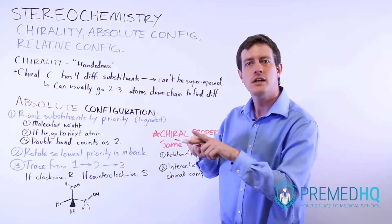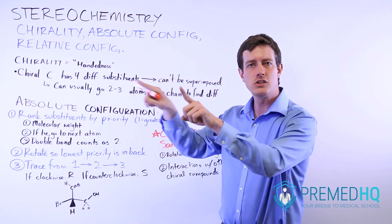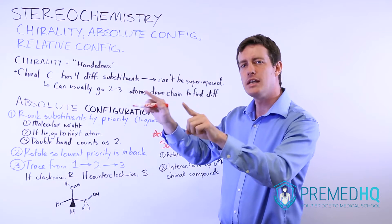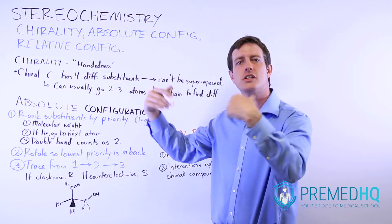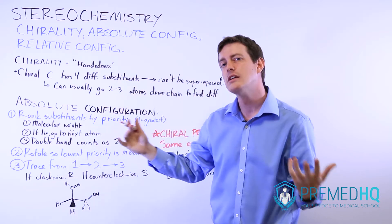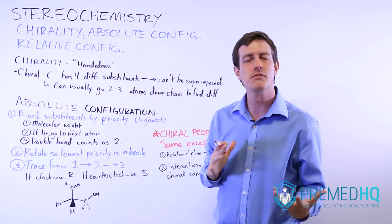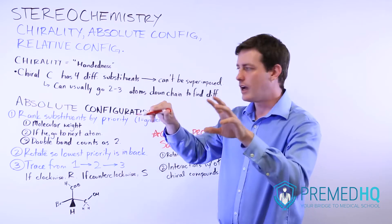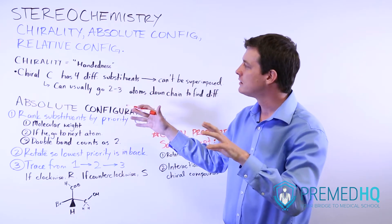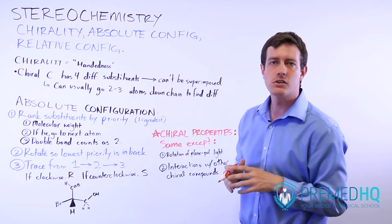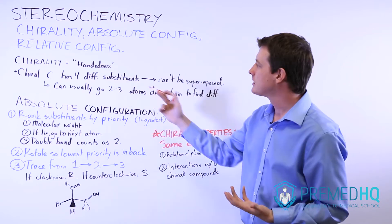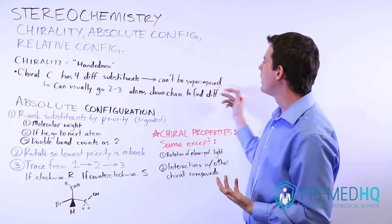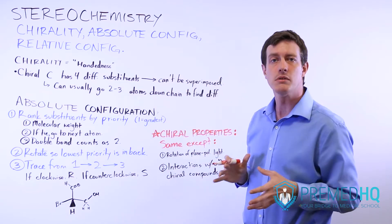For example, if you have a carbon that's attached to two other carbons, those aren't different by themselves. But if those two carbons are attached to other things, then you can consider those different substituents and treat them as parts of a chiral compound. When dealing with chirality, the first thing to think about is handedness and the fact that these cannot be superimposed.